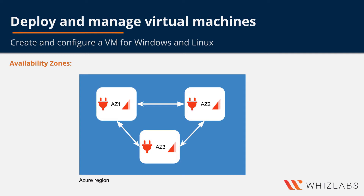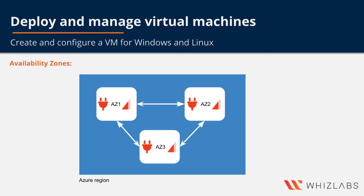We have already seen zone-redundant applications in storage accounts. With availability zones, Azure offers an industry-best SLA of 99.99% VM uptime, which is less than an hour of downtime in an entire year.